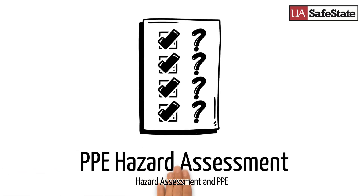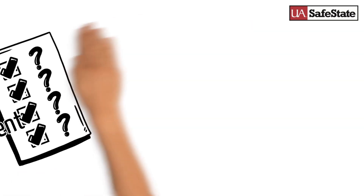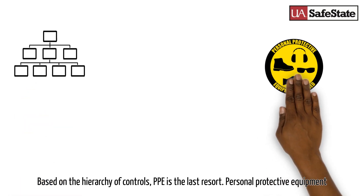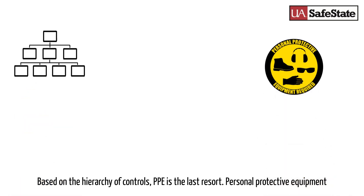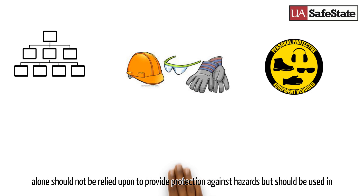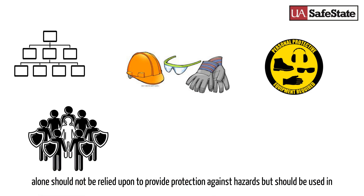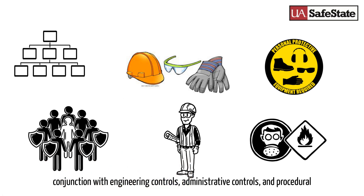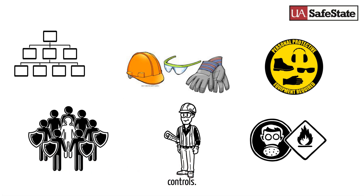Hazard Assessment and PPE. Based on the hierarchy of controls, PPE is the last resort. Personal protective equipment alone should not be relied upon to provide protection against hazards, but should be used in conjunction with engineering controls, administrative controls, and procedural controls.